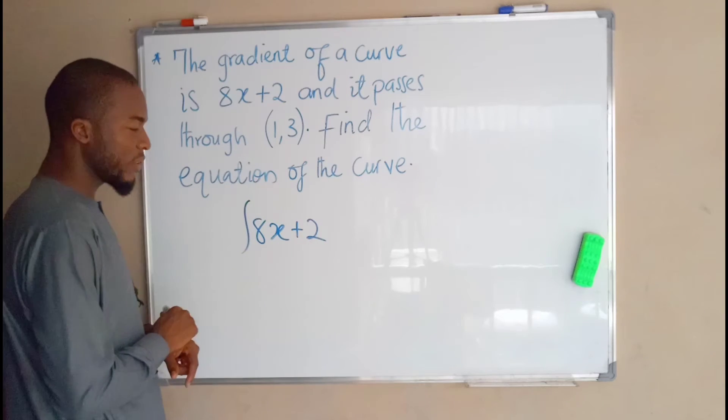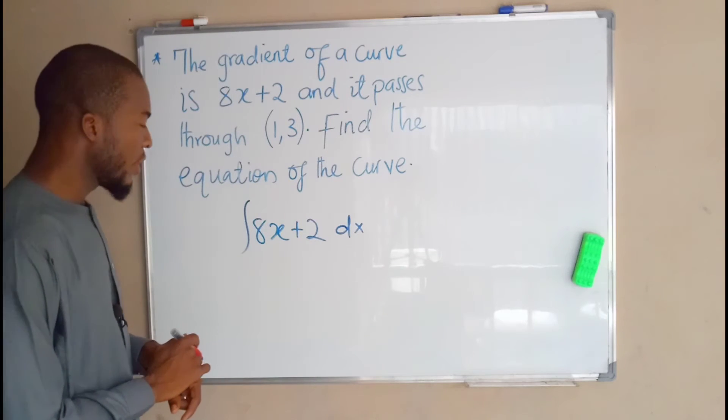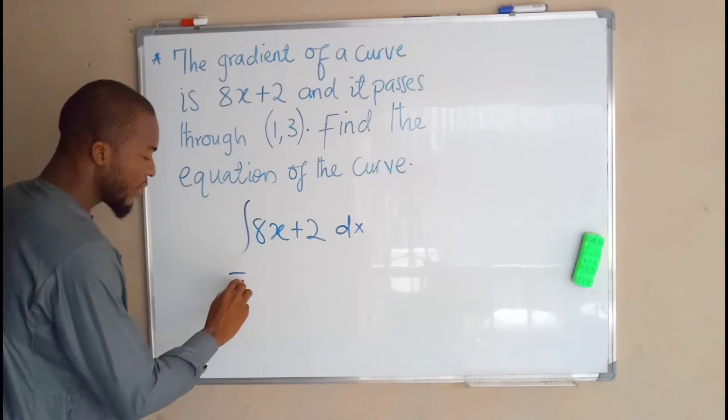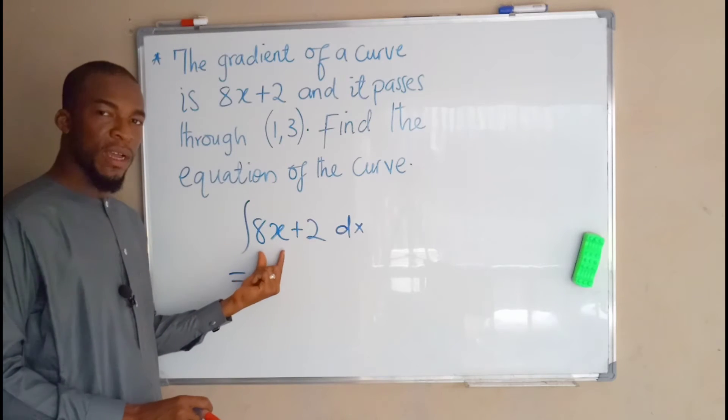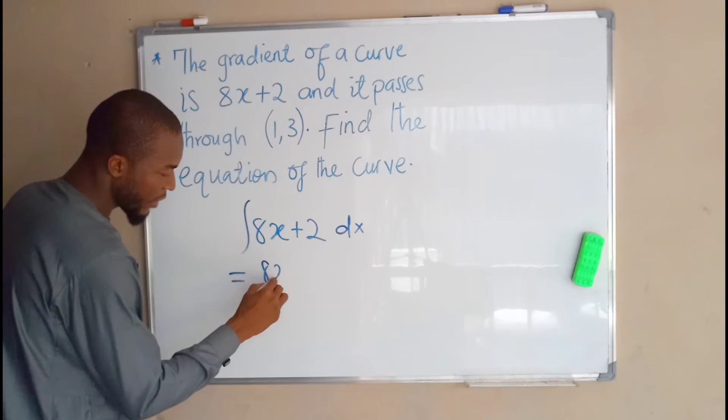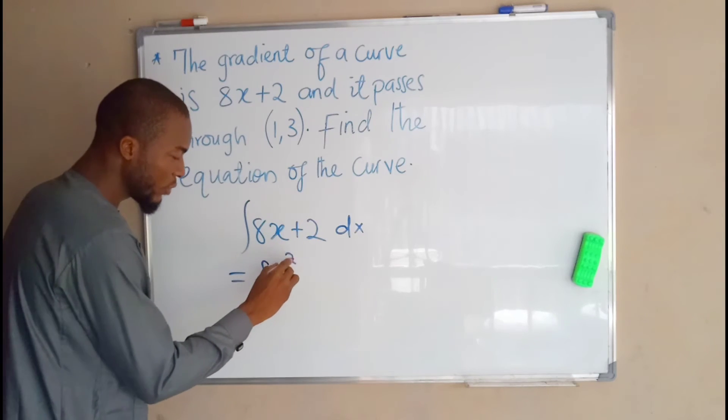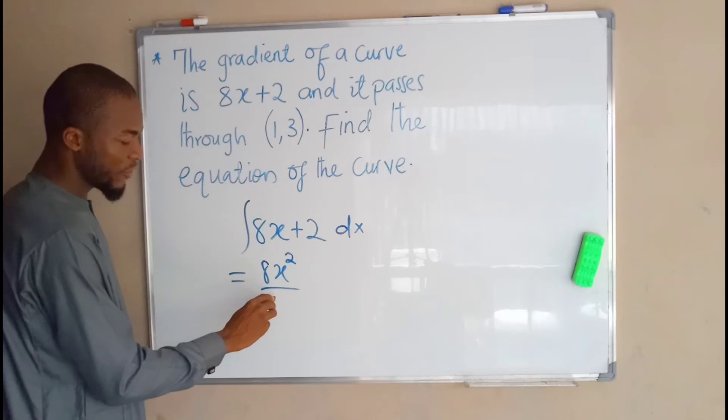Which is the same thing as integrate the terms independently. So the first term here, 8x raised to the power of 1 plus 1 equals to 2, and divide by that index 2.